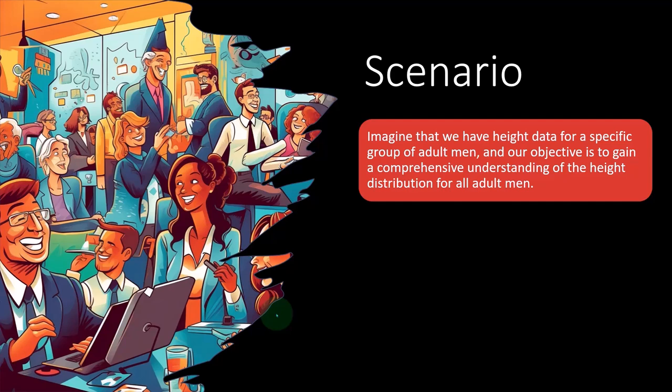Heights normally come to somewhat of a bell-shaped distribution. In other words, most people, when you look at the height of men for example, tend toward a middle point. Most people are going to be somewhere around an average height, and then you have the distribution somewhat around that average.